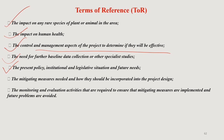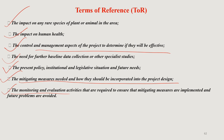The present policy, institutional, or legislative situation and future requirements also need to be considered while preparing the TOR. Mitigating measures needed for that particular development project and how they should be incorporated into the overall project design need to be mentioned. The monitoring and evaluation activities of that project — required to ensure that proposed mitigating measures are implemented and future negative impacts are avoided — should also be included. A project's outcome will be as good as its TOR is, as experts often say.